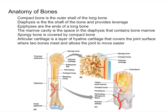Next we have the epiphysis, which is essentially the enlarged ends of the long bone — up there and down there on the diagram. It's enlarged to strengthen the joint and attach ligaments and tendons. The epiphysis is where the bone attaches to other bones, tendons, and ligaments, and it provides added surface area for muscle attachment.